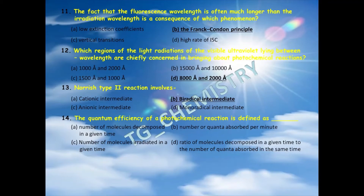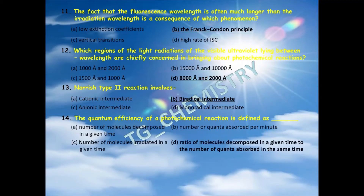Fourteenth question: the quantum efficiency of a photochemical reaction is defined as — option A) number of molecules decomposed in a given time, B) number of quanta absorbed per minute, C) number of molecules irradiated in a given time, D) ratio of molecules decomposed in a given time to the number of quanta absorbed in the same time. Option D is the right answer.